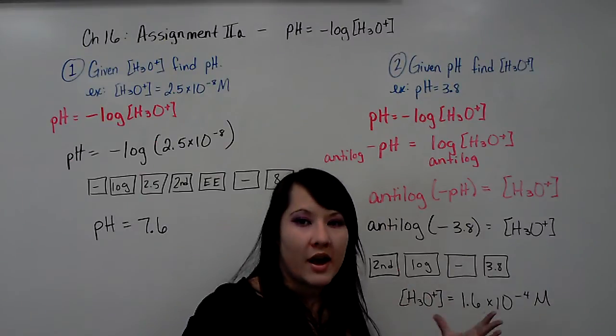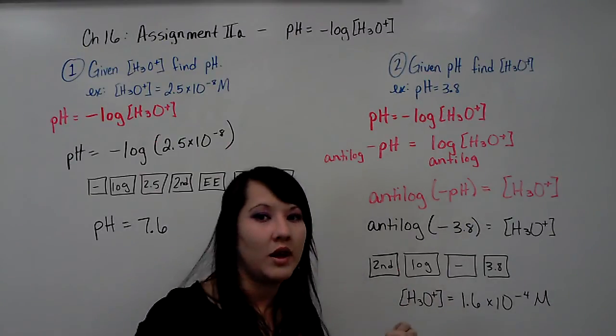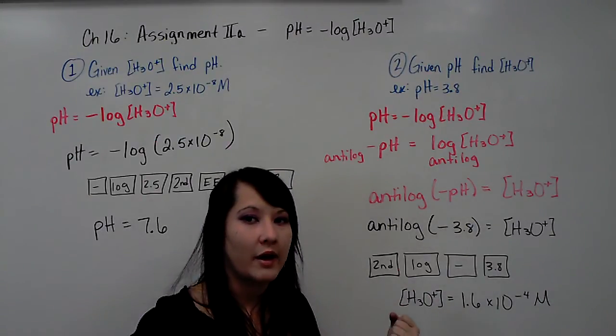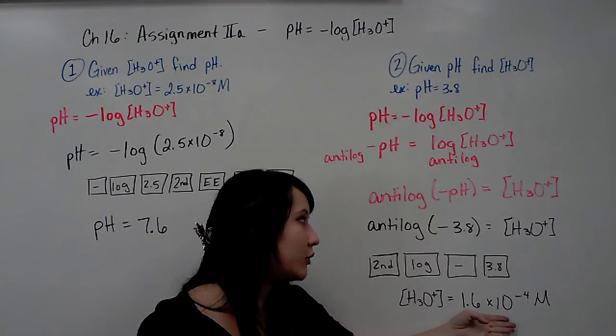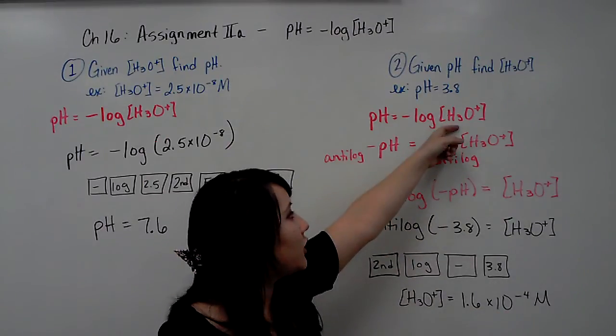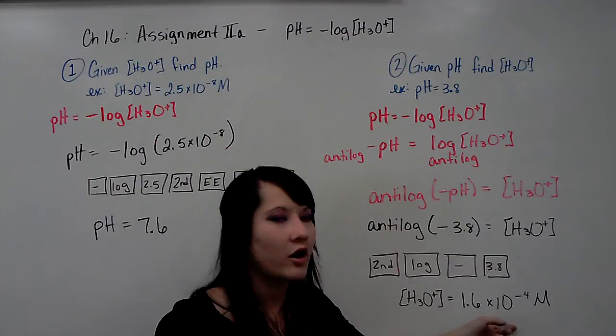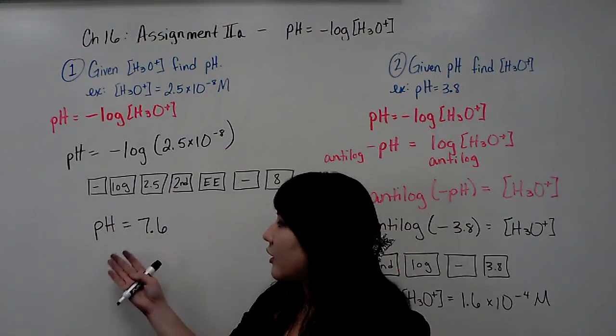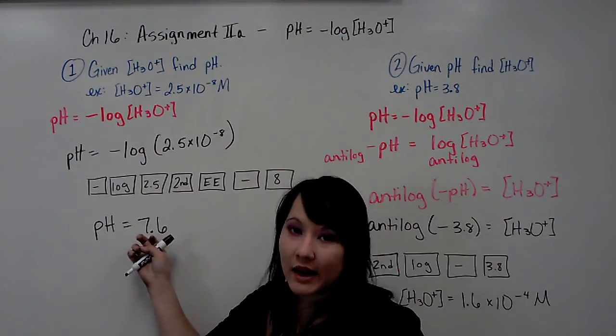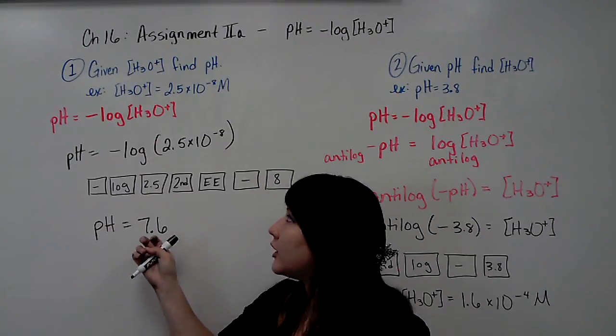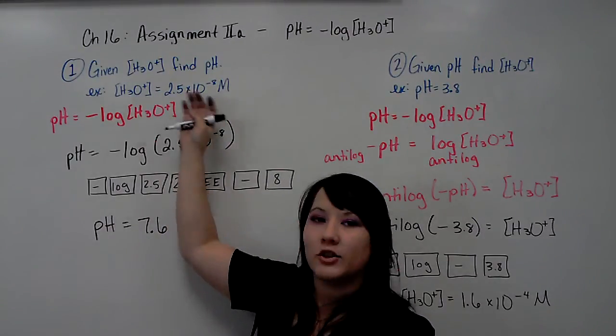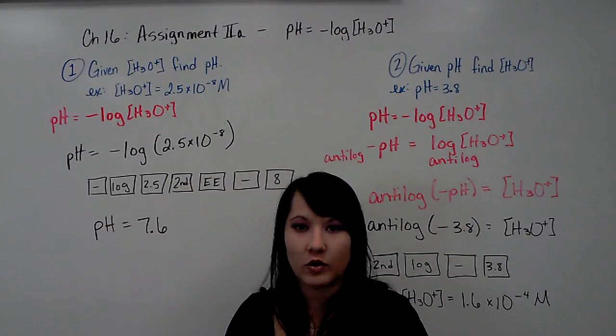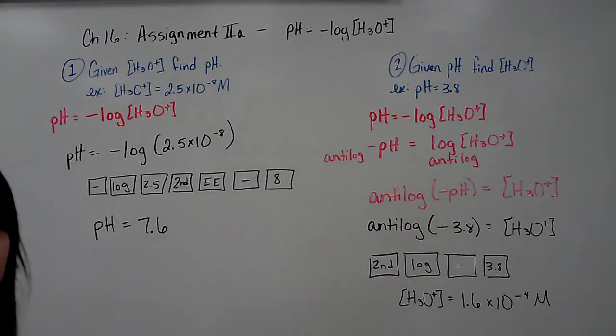Keep in mind that it's not a guessing game. You can actually check your answer by replugging in what you were given into the original equation. You can take the negative log of this number, and you should get a pH of 3.8. Just like over here, you could take the anti-log of this negative pH, and you should get the original hydronium ion concentration. So you can check your answer when it comes to these equations.